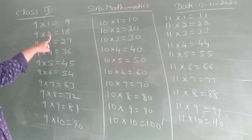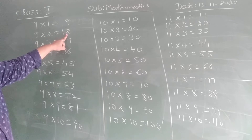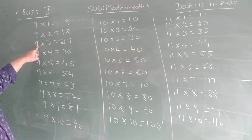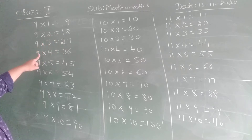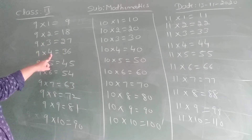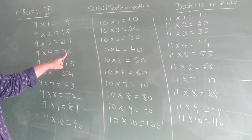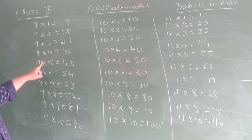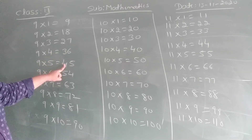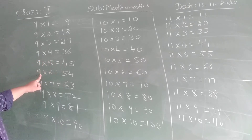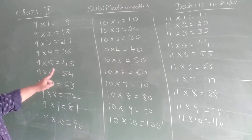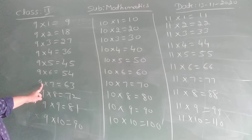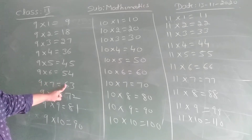9, 2 is 18. 9, 3 is 27. 9, 4 is 36. 9, 5 is 45. 9, 6 is 54. 9, 7 is 63.